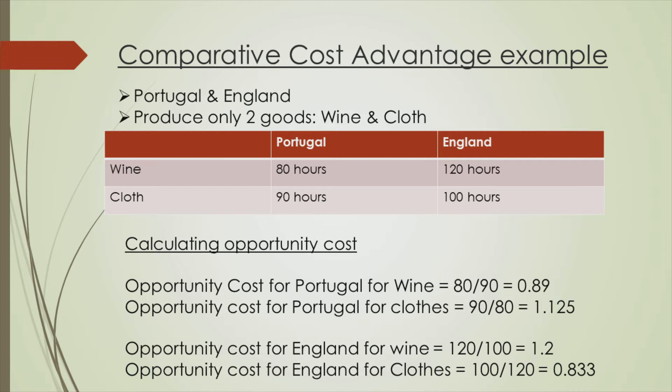So let's calculate opportunity cost for both countries. The opportunity cost of wine for Portugal is the number of units of cloth it has to sacrifice to produce one unit of wine. This can be calculated as 80 divided by 90, which equals 0.89. The opportunity cost of cloth for Portugal is 90 divided by 80, which equals 1.125.